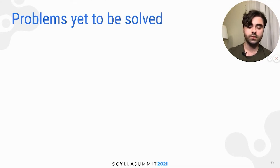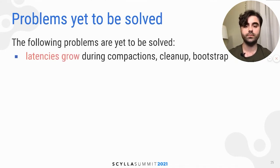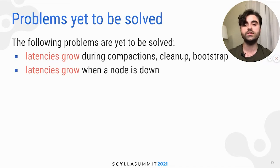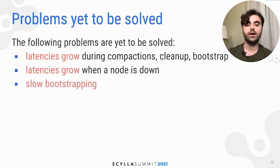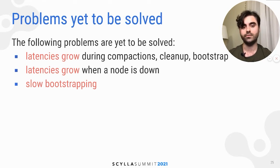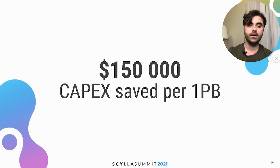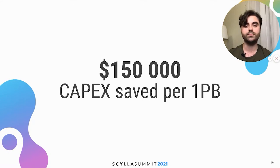There are still some problems to be solved. Latencies grow during compactions, cleanup, bootstrap, and when a node is down — but the growth stays within a reasonable limit. Bootstrapping is somewhat slow but still works and is faster than repair. As for why you should use an HDD setup: you can save at least $150,000 of capital expenses per petabyte compared to an SSD setup.